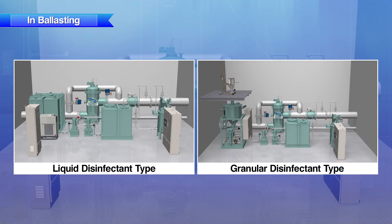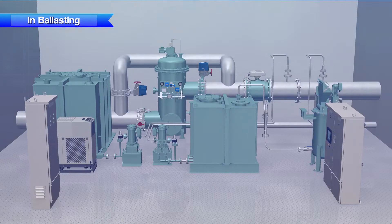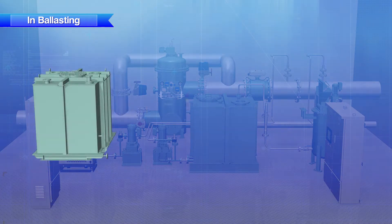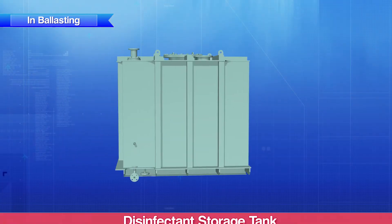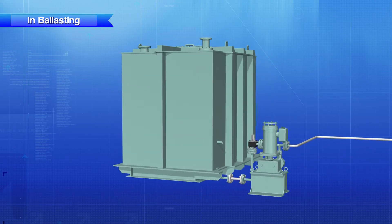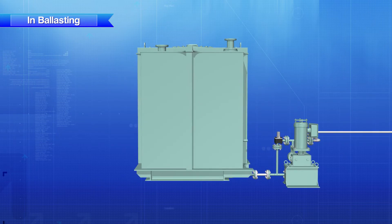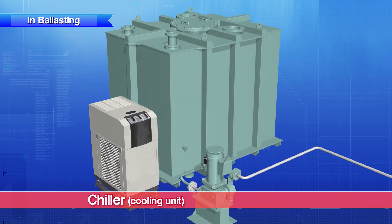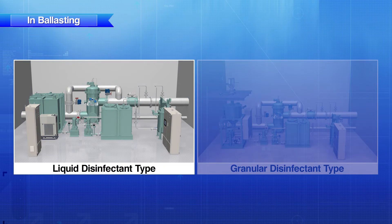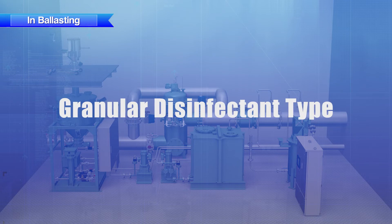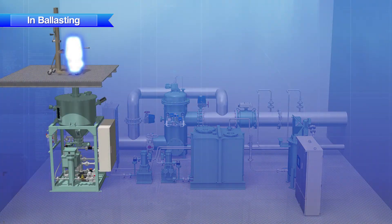Now let's look at the difference in components and chemical injection process for each type of disinfectant. For the liquid disinfectant method, the liquid disinfectant stored in the disinfectant storage tank is pumped by the chemical injection pump and injected into the ballast water line. The disinfectant storage tank is equipped with a chiller — a cooling unit that prevents deterioration.